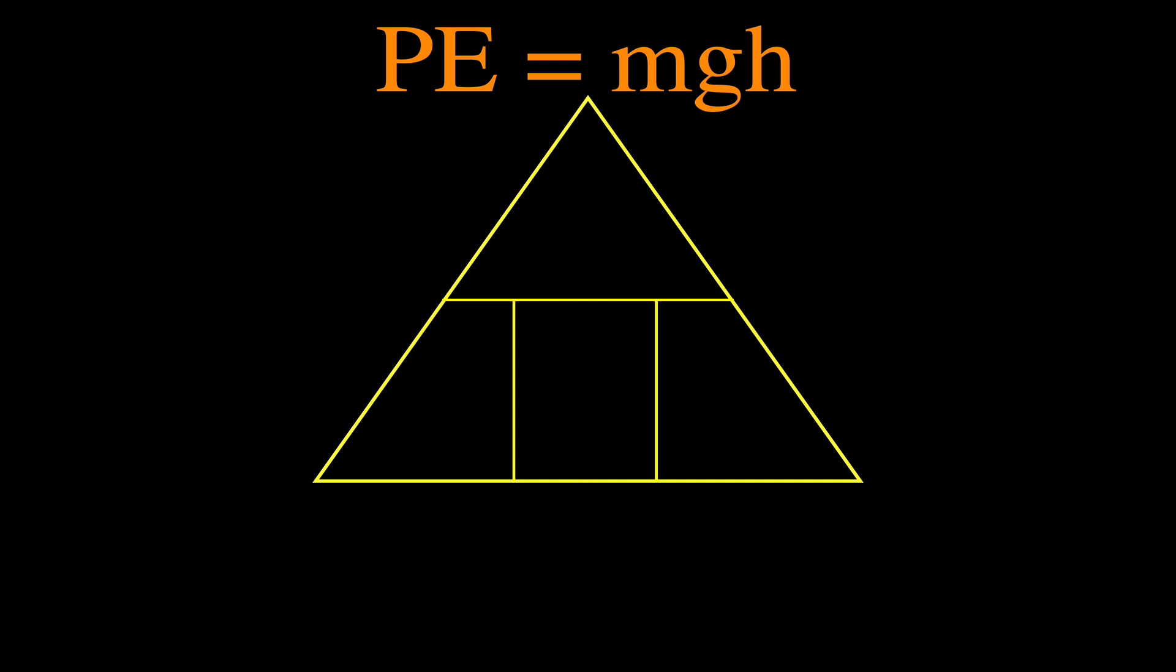We've got to put these four things—PE, m, g, and h—inside the triangle so we can use it to help us rearrange the formula to solve for m and h. If you know how to do it mathematically, it's not that difficult, but I think this is a good helper that people often use. The PE goes on the top, and you see we have these three things, m, g, and h, multiplied times each other, so we put those one, two, and three like that.